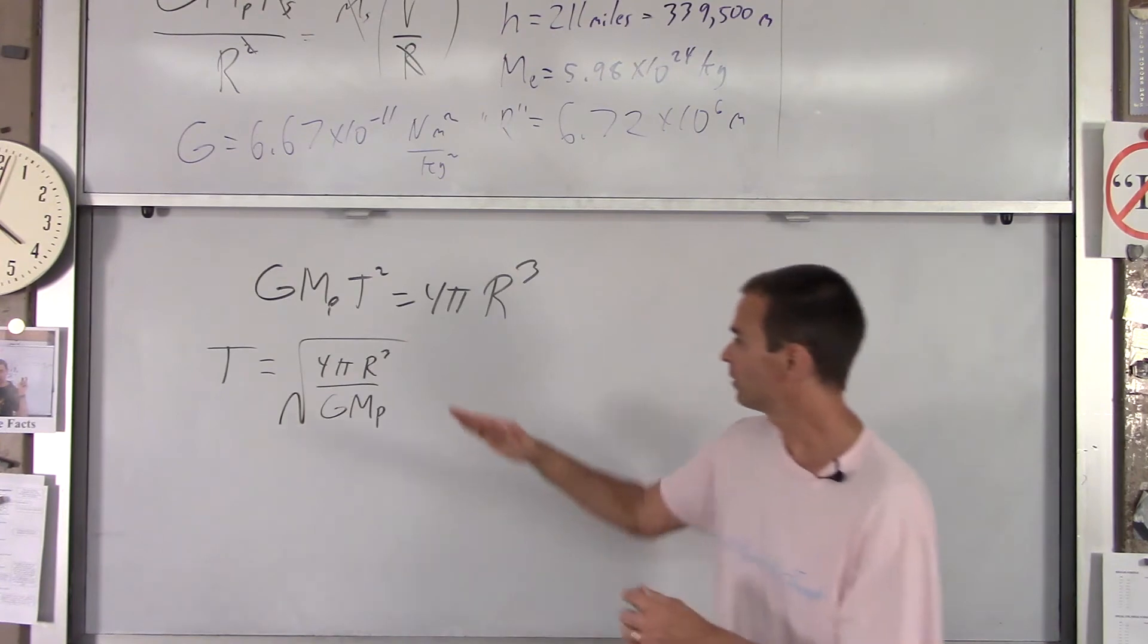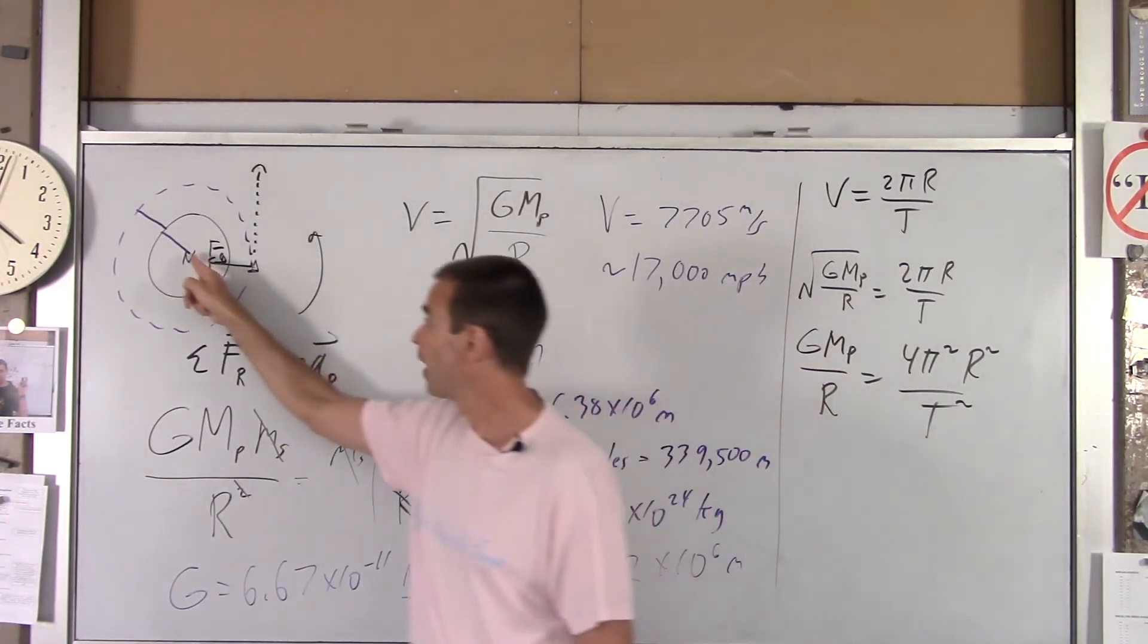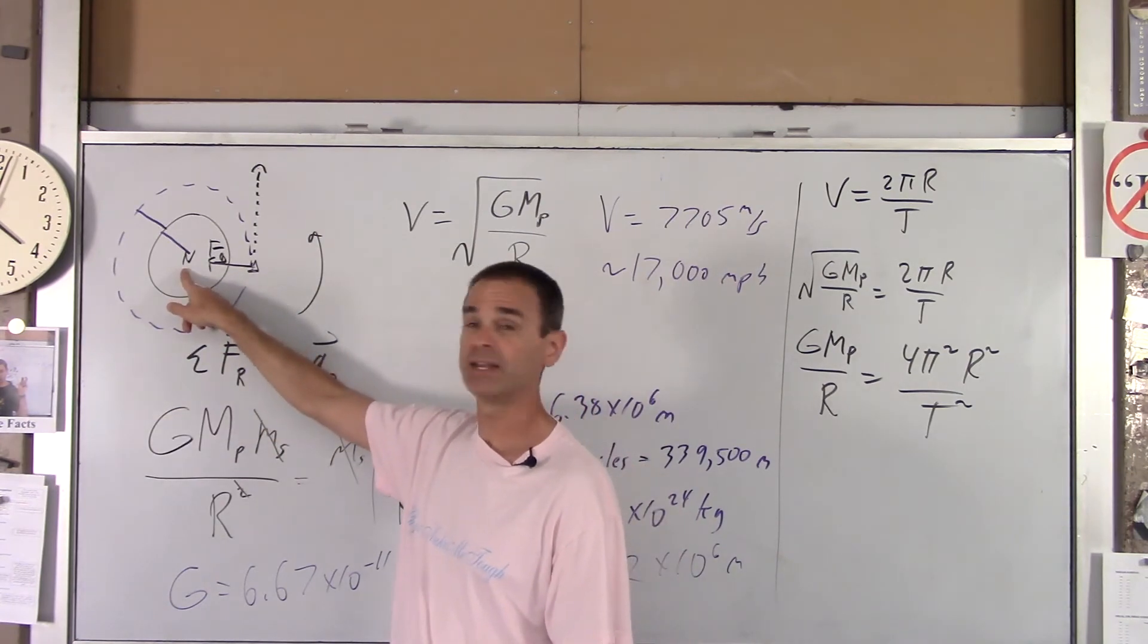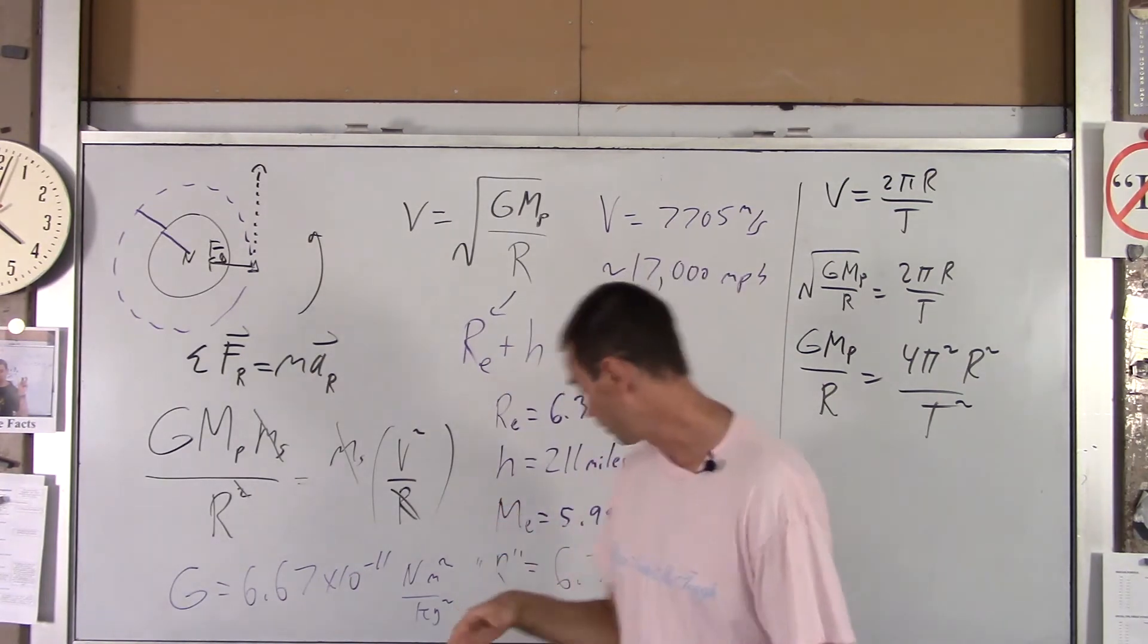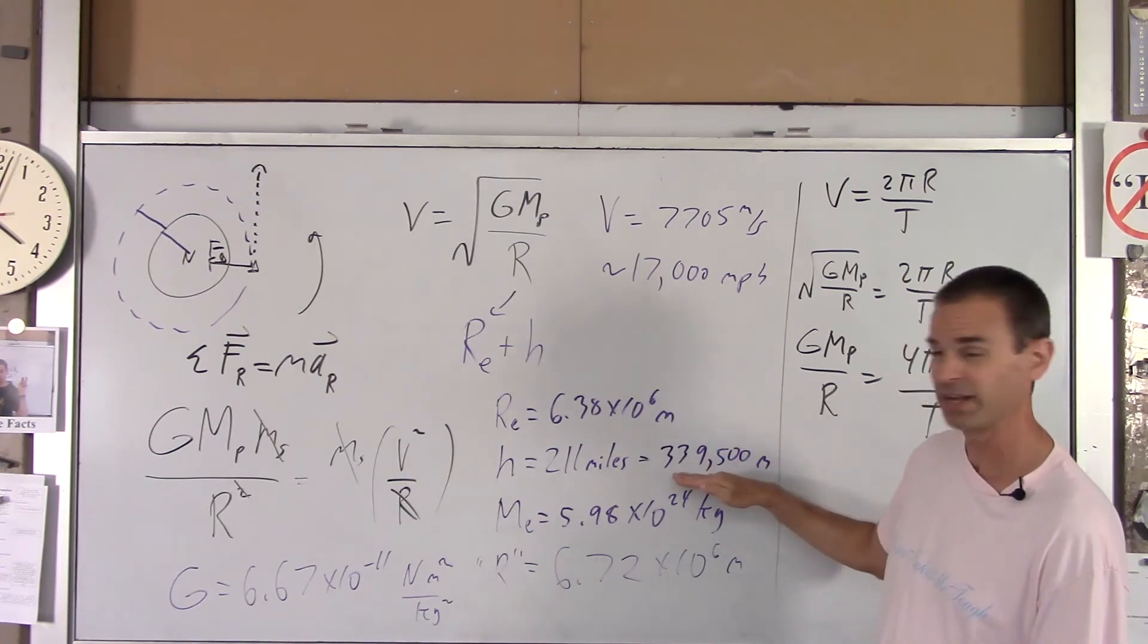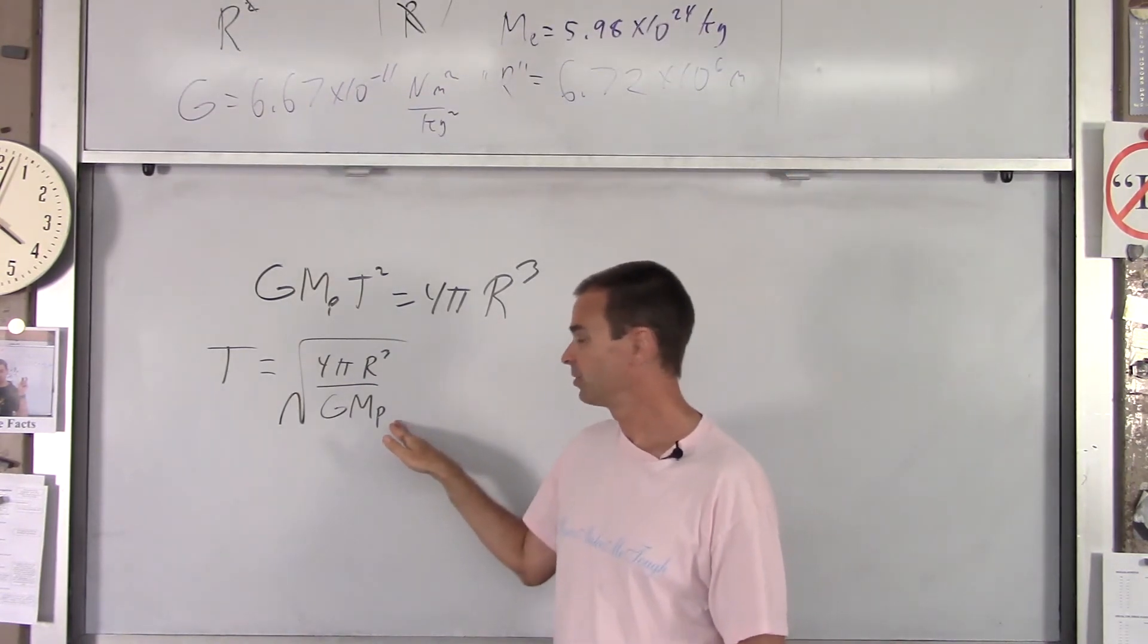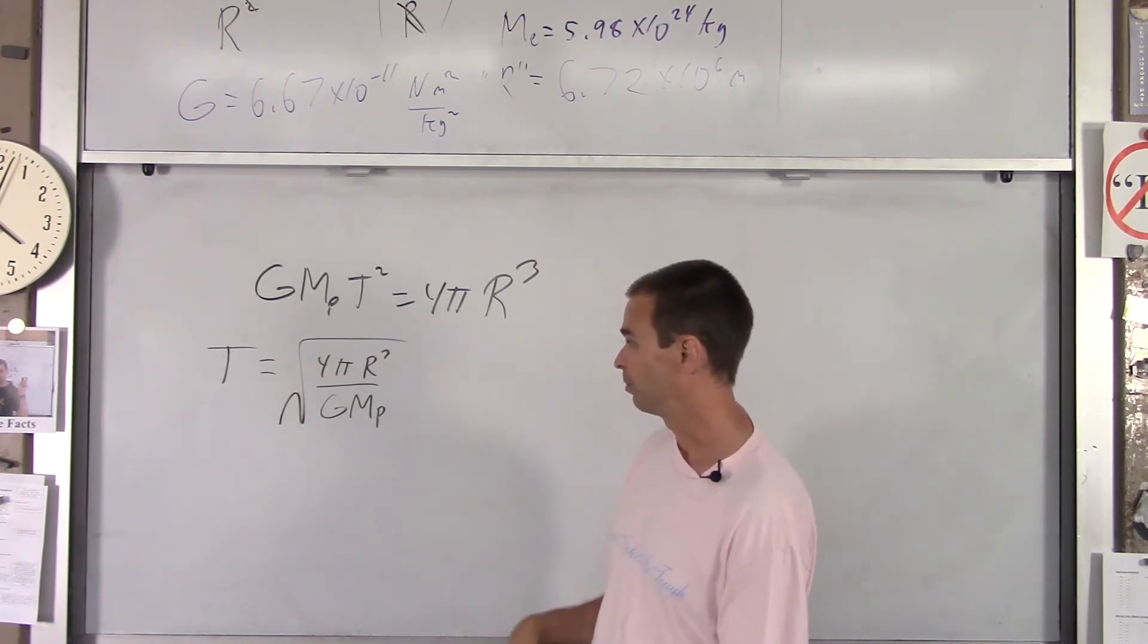So, you end up with g mass of the planet t squared equals 4 pi r cubed. Notice it's an r cubed, not r. And if you get t squared by itself, or in the square root, you get 4 pi r cubed over g mass of the planet. Now, a quick reminder, what's r again? r is always the radius of the circle that the object is making. Or, another way to put that, it's the distance from the center of the planet to the center of the ship. That's the r you plug in there, which in our case was this number. We got that by adding the radius of the planet plus the height above the planet that we're sitting.